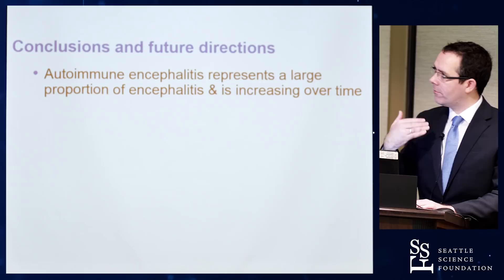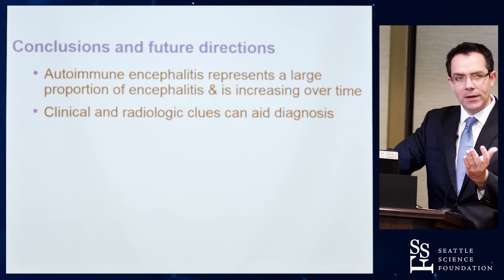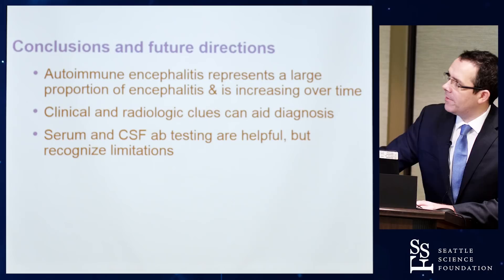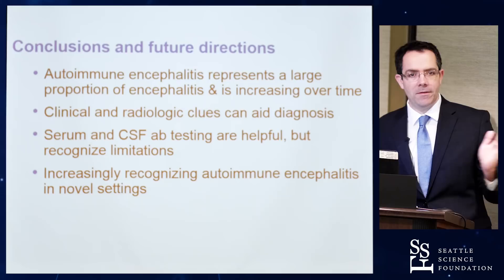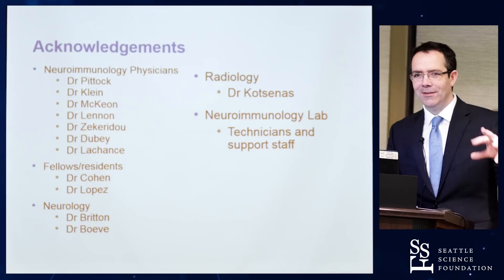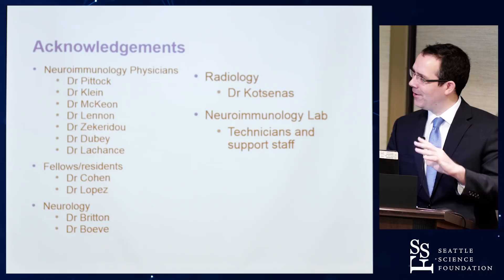In conclusion, autoimmune encephalitis represents a large and increasing proportion of encephalitis cases. Clinical and radiological clues include faciobrachial dystonic seizures for LGI1, severe weight loss for DPPX, and psychosis with oral mandibular dyskinesias for NMDA receptor antibodies. Serum and CSF antibody testing are helpful but have important limitations. We are increasingly recognizing autoimmune encephalitis in novel settings including post-herpes simplex encephalitis, checkpoint inhibitor use, and the post-transplant setting. The Mayo Clinic autoimmune neurology group, including Dr. McKeown and Dr. Pittock, has contributed significantly to this research.